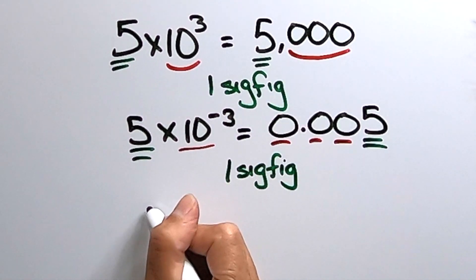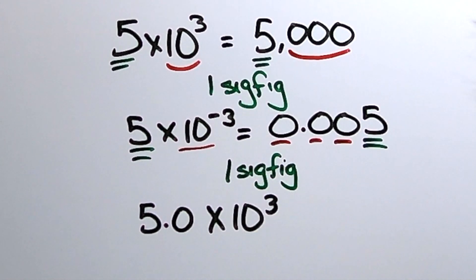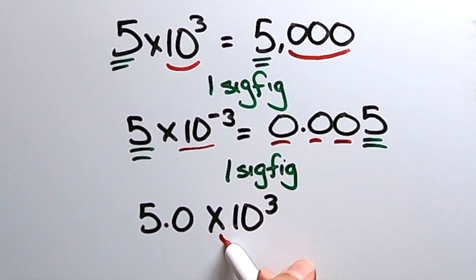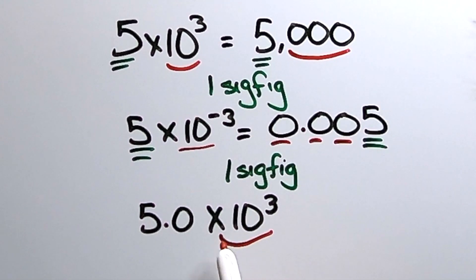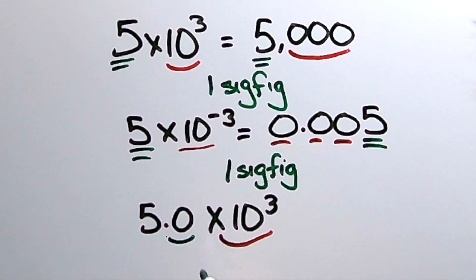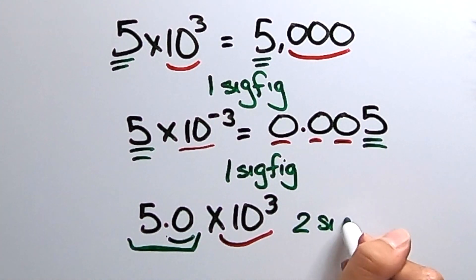What if they had 5.0 × 10³? Not much different than the previous ones. The 10³ still indicates three zeros to the right, and those are not considered significant because we have to write them. But they bothered to put a decimal place and an extra zero. If they bother to write an extra zero, you will bother to show it as a significant figure in your answer. So this number actually has two significant figures.